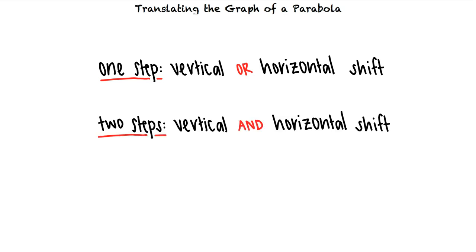When a graph is translated, each of its points is shifted the same distance in the same direction. When translating a graph, we can use the following rules under the assumption that c is greater than zero.